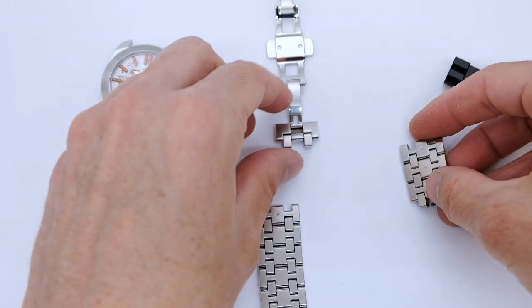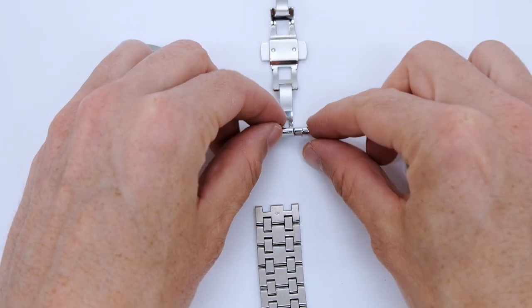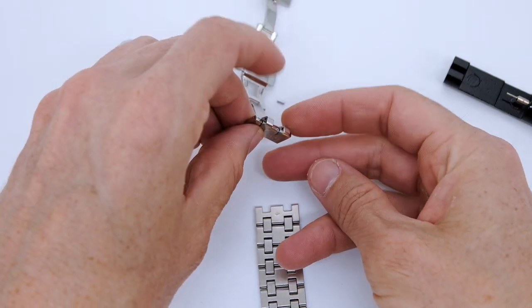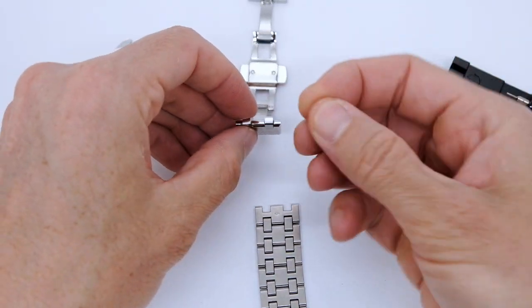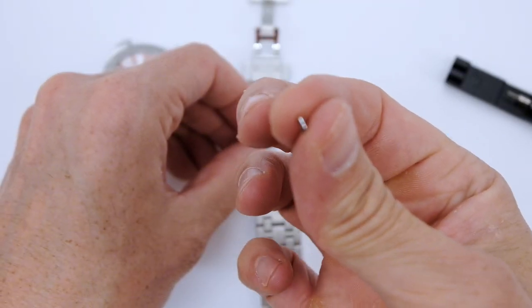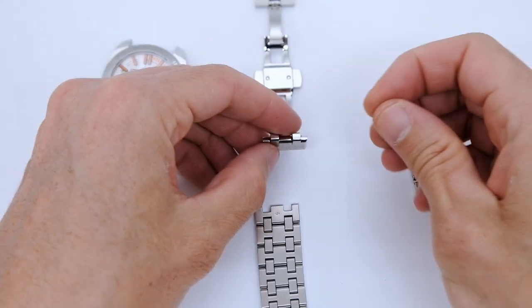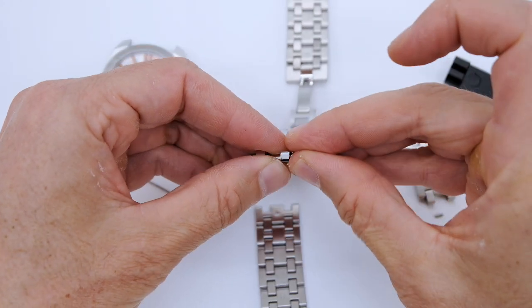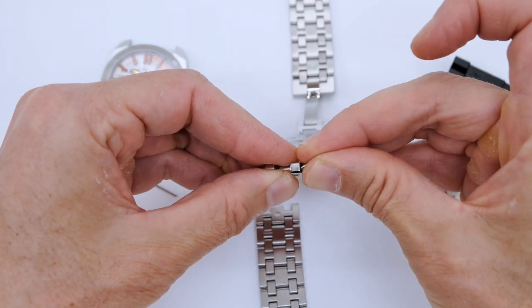Be aware that inside the link there's a small tube here, and this is exactly what keeps your bracelet, the pin inside the bracelet. So it always needs to be inside this part here.